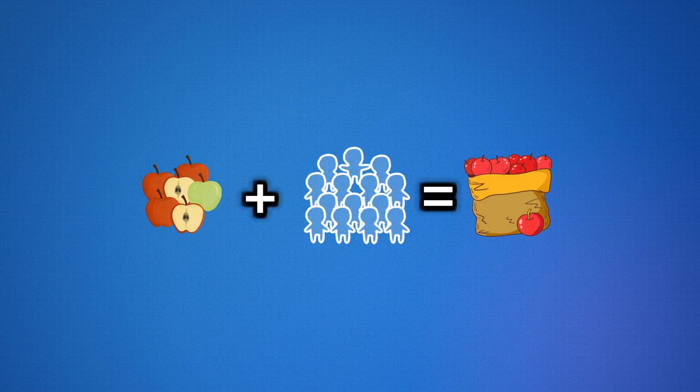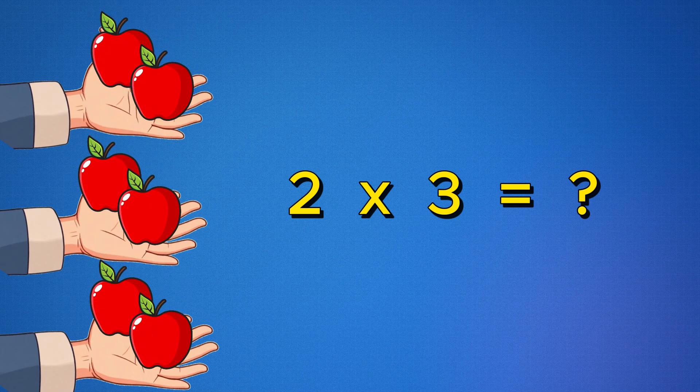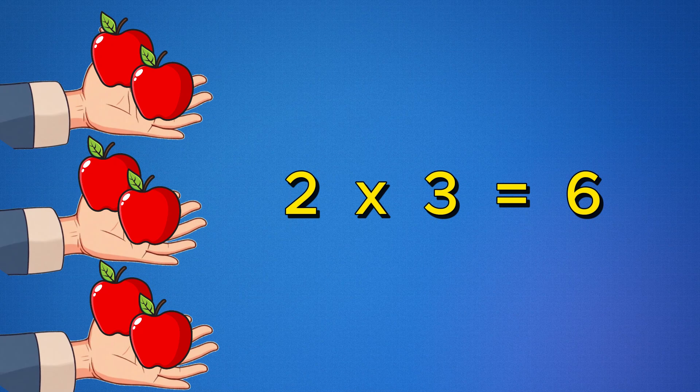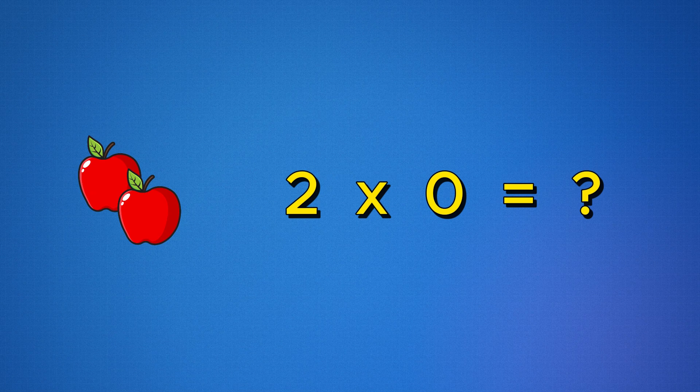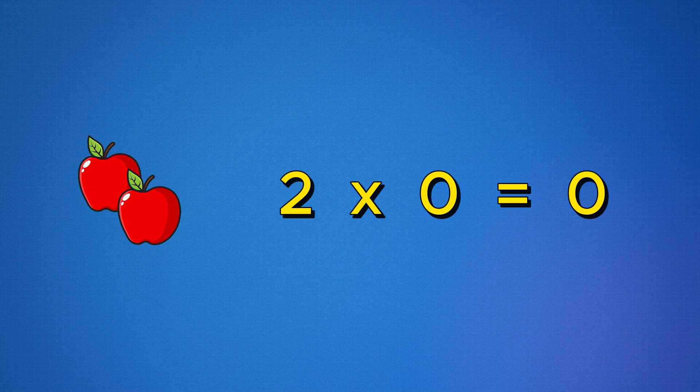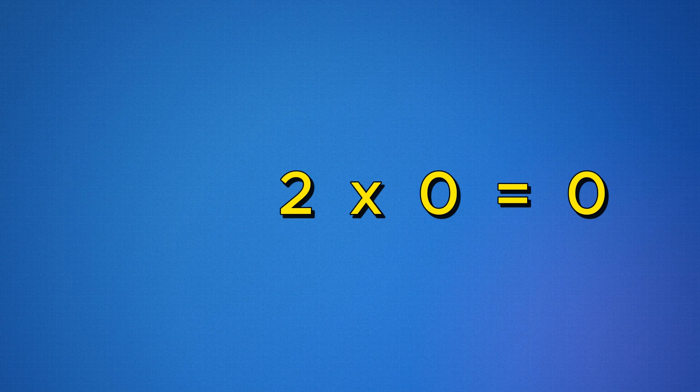If you give two apples to three people, then your total number of apples is six. But if you give two apples to zero people, then how many people are receiving the apples? That's right. There's nobody to receive the apples. So the answer is zero. If there are no groups, there are no apples to count. So two times zero equals zero.